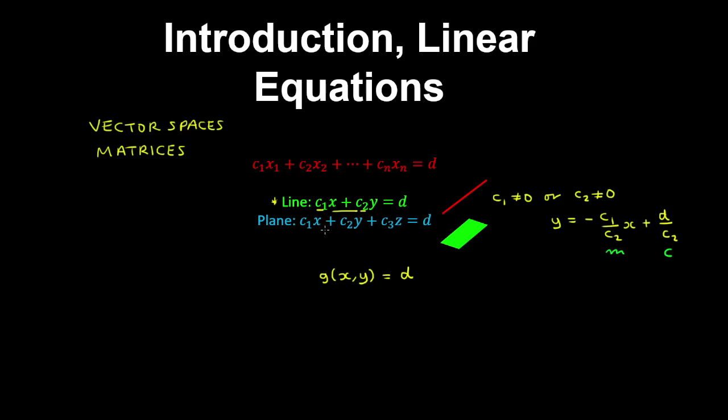Now in three dimensions, our linear equation represents a plane, where the constants c1, c2, and c3 are also not all zero. And we can see the plane here for a visual.